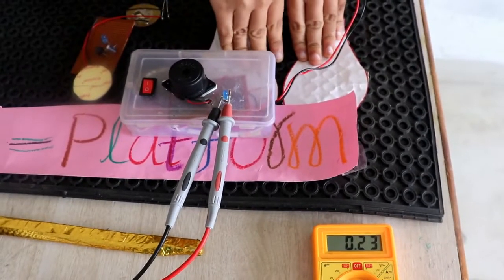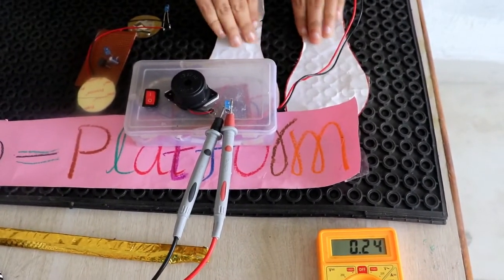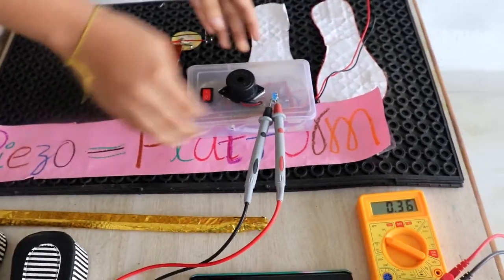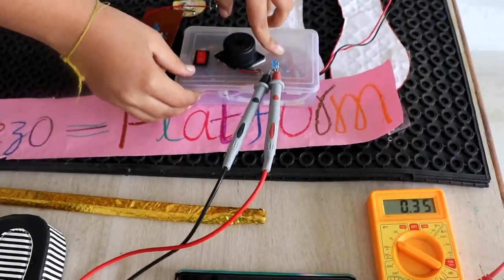When I am pressing this, see when I am exerting some pressure on this, voltage is getting generated. And through this voltage, through this multimeter, I have connected to our circuit.